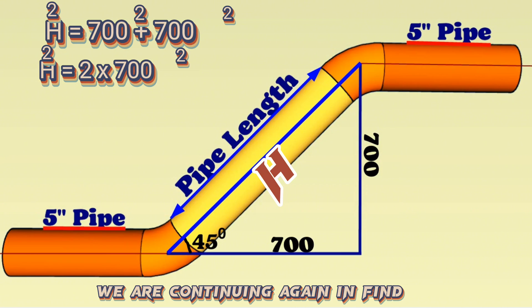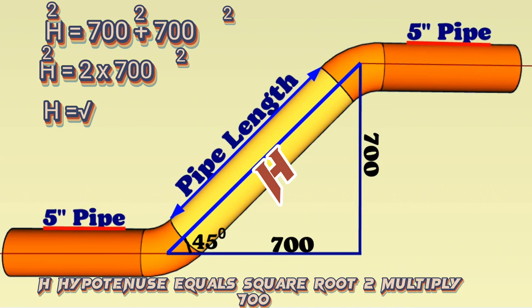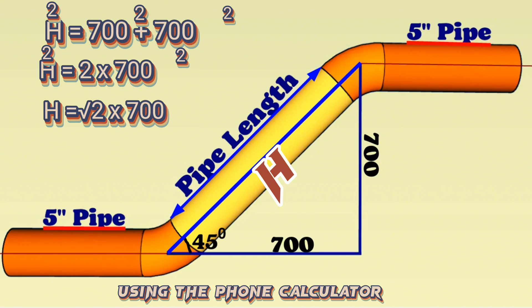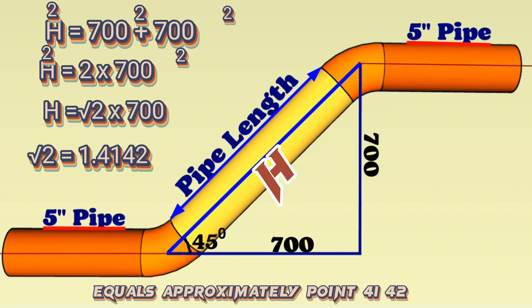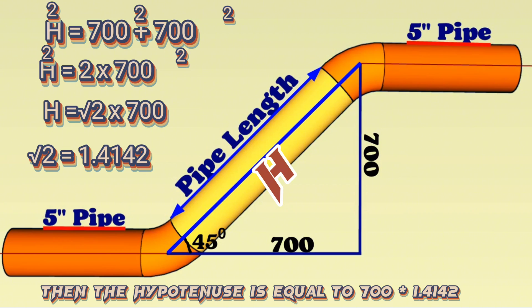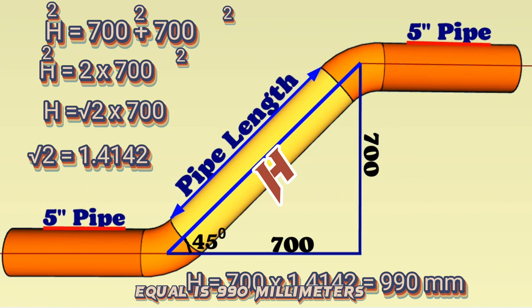We are continuing again and find H hypotenuse equals square root 2 multiply 700. Using the phone calculator, we find that square root 2 equals approximately 1.4142. Then the hypotenuse is equal to 700 times 1.4142, which equals 990 millimeters.